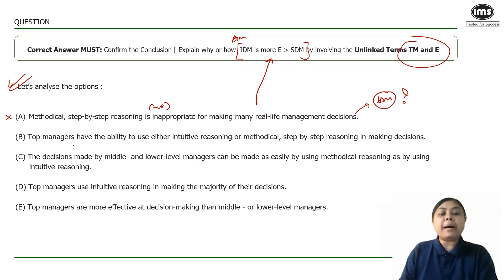Option B. Top managers have the ability to use either intuitive reasoning or methodical step-by-step SDM. So this option is attractive, it's introducing top managers. But my question is that if top managers have the ability to use X or Y, does that still validate why IDM is more effective? What is missing here? The unlinked term effectiveness is missing. I really don't know what the relationship between top managers and effectiveness is. I can safely remove option B.